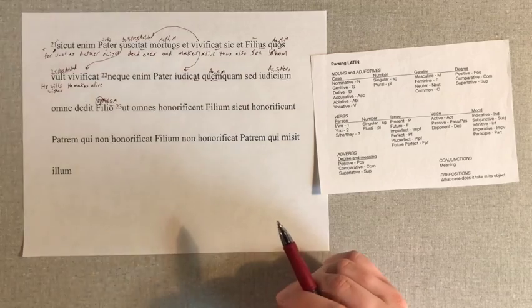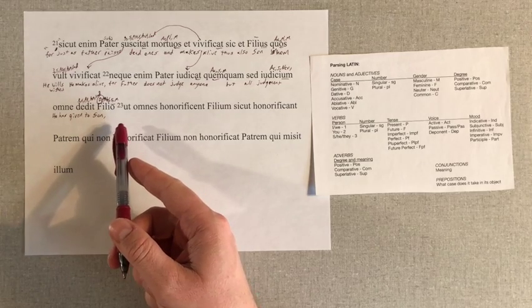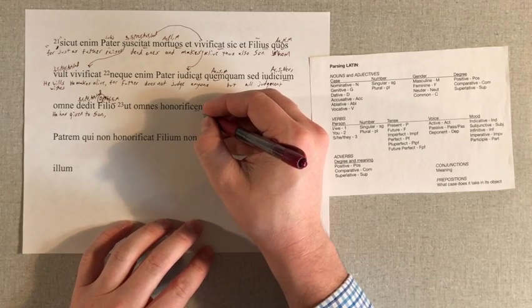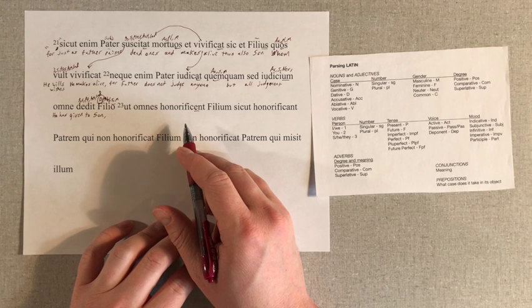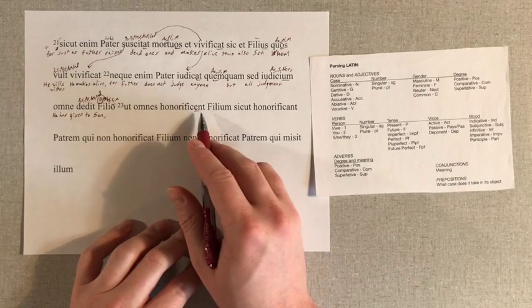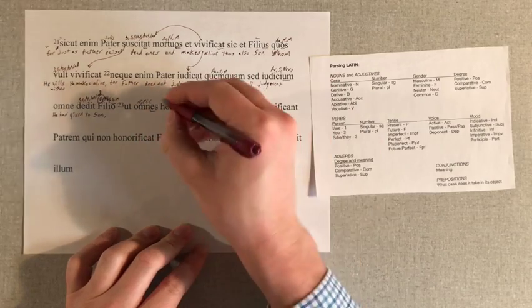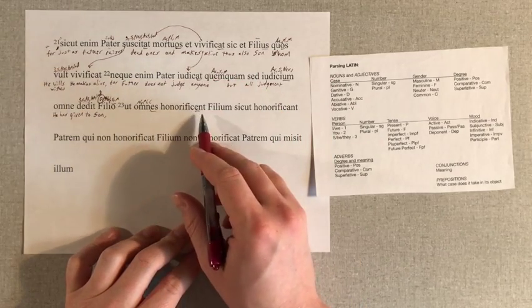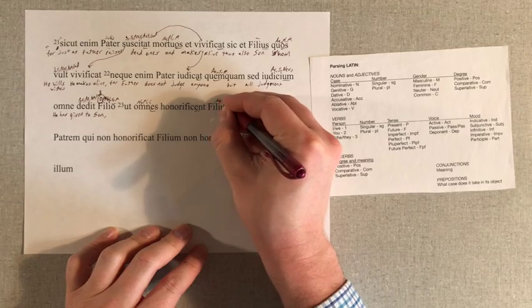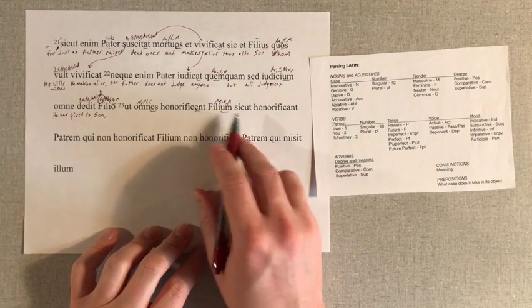Moving into verse 23, we have a purpose or result clause with ut, and if we look at honorificent with that -e right there, we have our first subjunctive. Honorificent is first conjugation, -ent subjunctive to go with ut, third person plural. Omnes right there — nominative plural common masculine — as our subject fitting the plurality of the verb, with filium — -um — as our direct object, singular masculine. Sicut introduces a new clause.